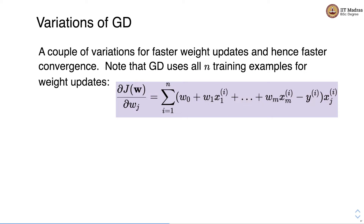The gradient descent algorithm uses all training examples for the weight update. Specifically, it performs the computation for calculating the partial derivative of the loss with respect to the weight by summing up the difference between the predicted value and actual value multiplied by the feature value, and this summation happens over all n training examples.